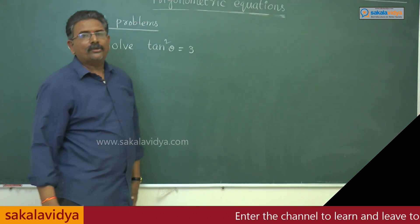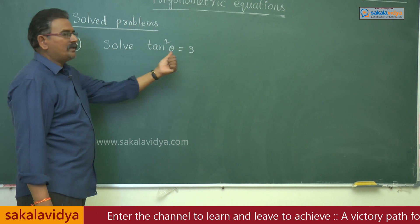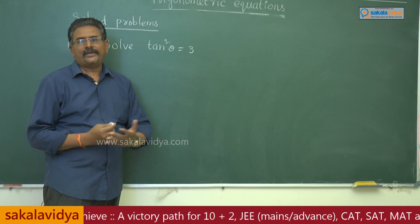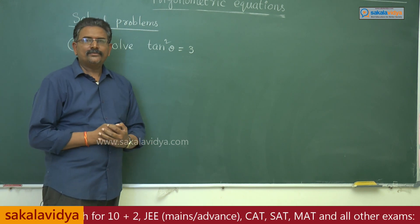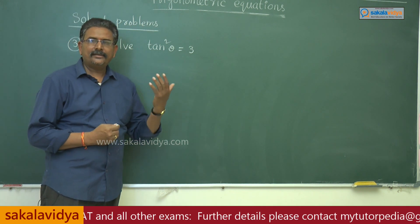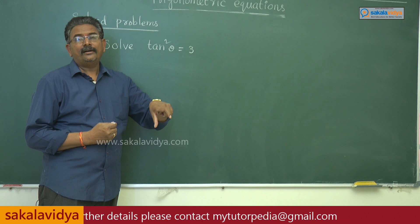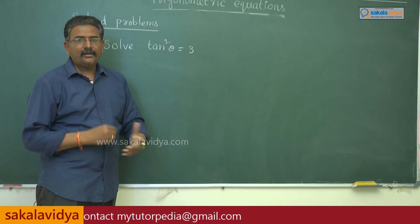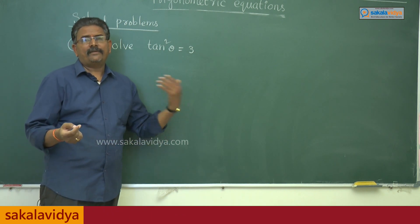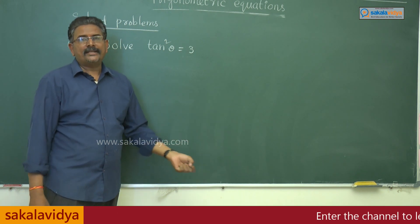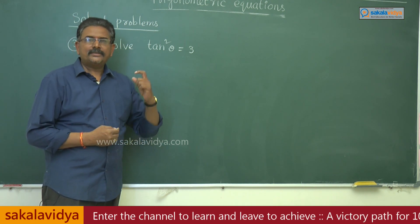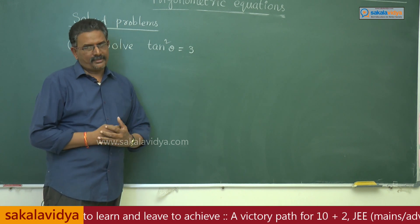Let us solve one more problem: solve tan²θ = 3. We can write this as tan²θ = (√3)² = tan²(π/3). So the principal value alpha = π/3. Since it is in the form tan²θ = tan²α, the general solution is θ = nπ ± α. This procedure is to be adopted.